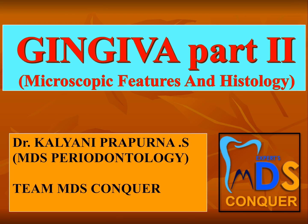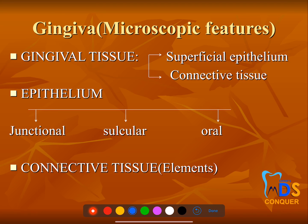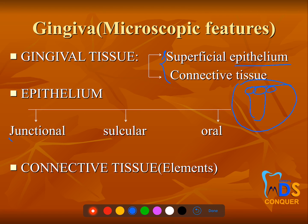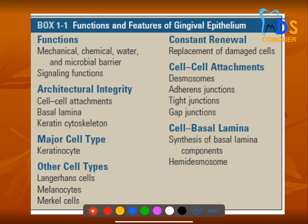Hi, my dear conquerors, this is Dr. Kalyani from Team MDS Conquer. Today we'll be discussing gingiva — this is Part 2, covering microscopic features and histology. Gingival anatomy has two types: superficial epithelium with its cells, and inner connective tissue structure. The epithelium is of three types: junctional, sulcular, and oral epithelium, and connective tissue has its own elements.